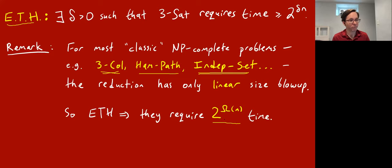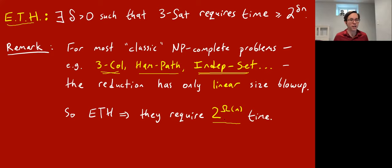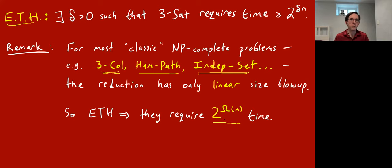There's a question: under ETH, there cannot be a linear-sized blowup reduction to planar Hamiltonian path. Absolutely correct. If you assume ETH, then there does not exist a reduction from 3-SAT to planar Hamiltonian path that takes instances of size n to instances of size n^1.9. That's kind of cool actually, because it's a non-existence result for algorithms — showing that the problem of reducing 3-SAT to planar Hamiltonian path cannot be done in a very efficient way with size blowup n^1.9. In particular, it cannot be done in time n^1.9.